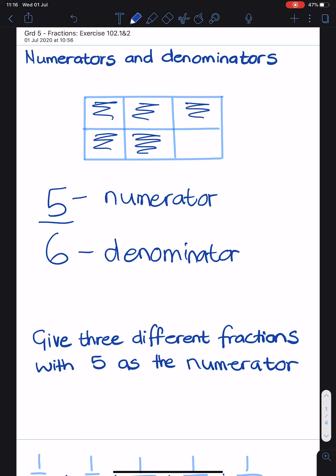Now the denominator tells us how many pieces there are all together. So if you look at my chocolate bar over here, you will see that there are 6 pieces all together.